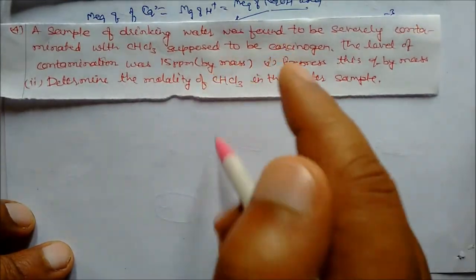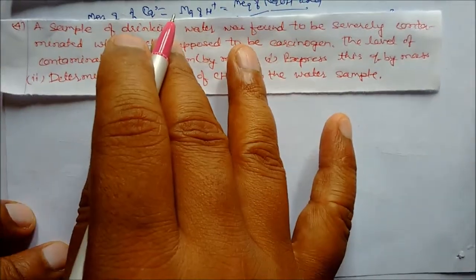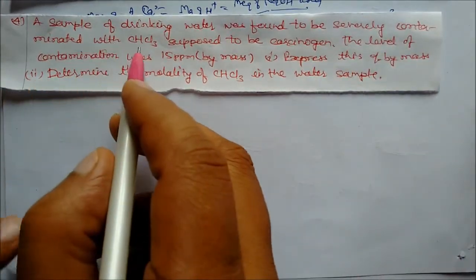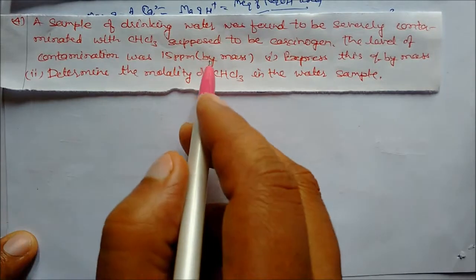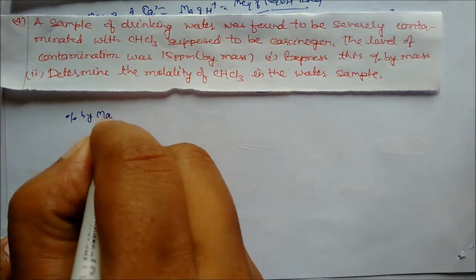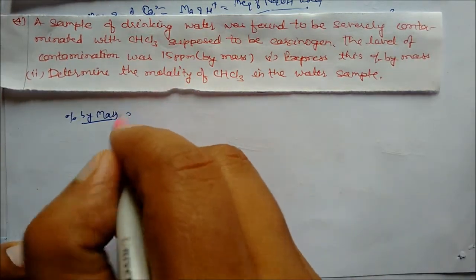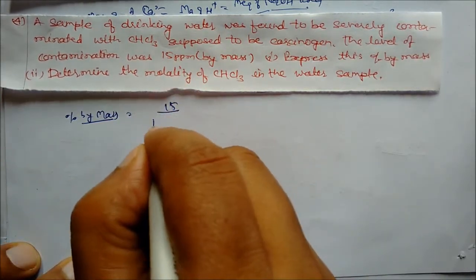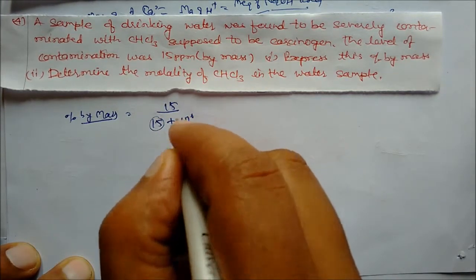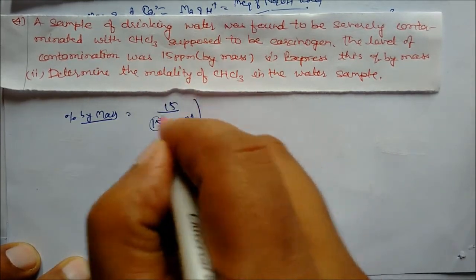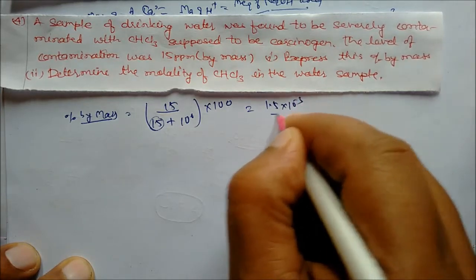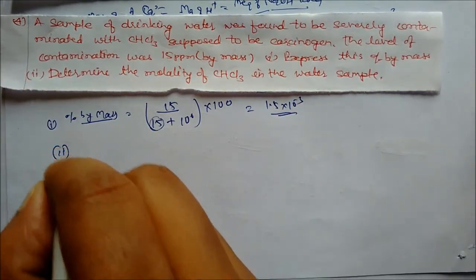Next question: a sample of drinking water is found to be severely contaminated with CHCl₃, which is carcinogenic. The level of contamination is 15 ppm by mass. Percentage by mass: 15 ppm means 15 by mass divided by 10⁶ weight of water. Multiplying and dividing by 1000 gives the answer 1.5 × 10⁻³ percent by mass.